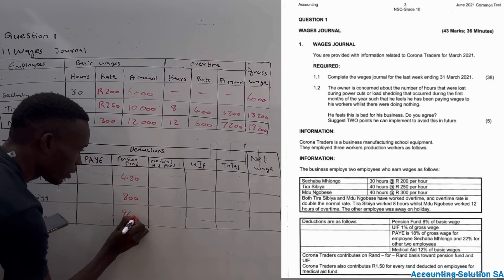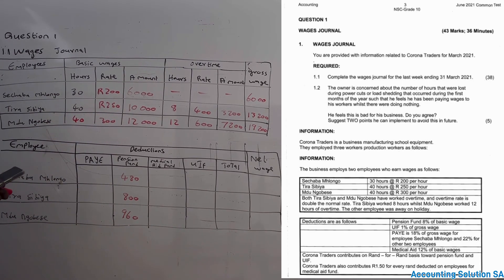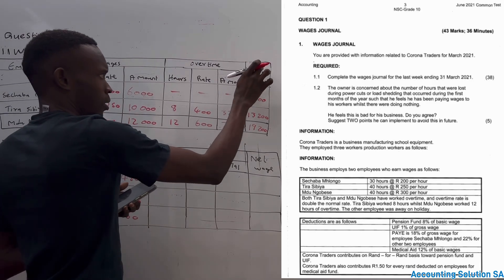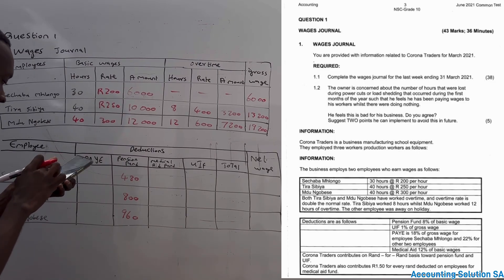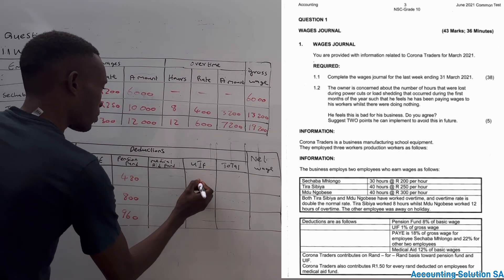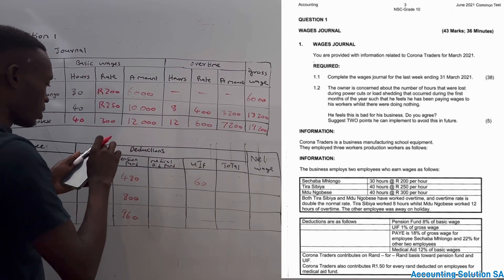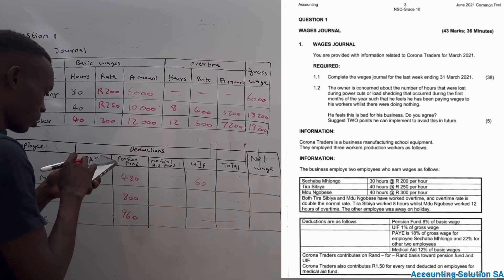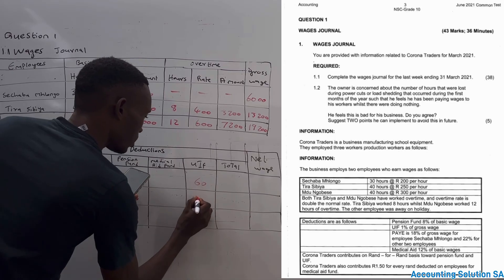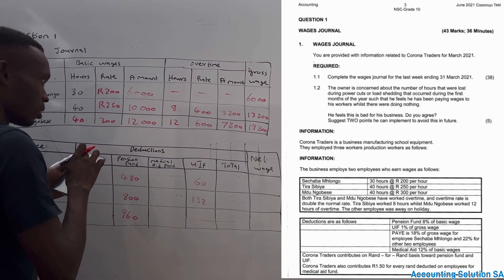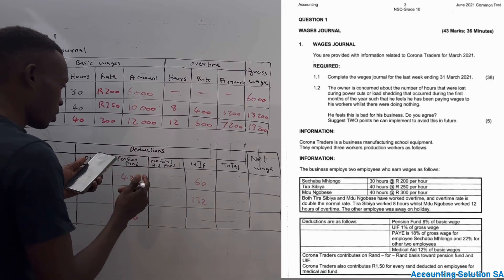UIF is 1% of gross. Gross is this one. 1% of gross: let's do it. 6,000 multiplied by 1% is going to be R60. UIF is going to be R60 for this. And for this one, 13,200 is going to be R132. And for 19,200, it's going to be R192.